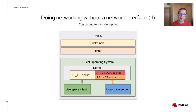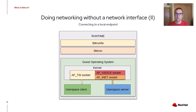Now we have a user space client that has received a TSI socket instead of an INET socket. If this client wants to connect to a local endpoint — a server running within the context of the guest — when connect is called, the TSI socket will attempt to fulfill that request using its INET personality. Since there is a user space server listening on a port within the local guest context, the connection will be fulfilled immediately. Both the client and server will communicate in the usual way, without any knowledge that they are going through a TSI socket.